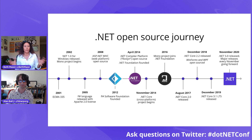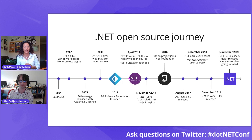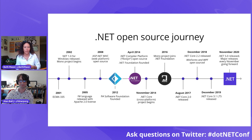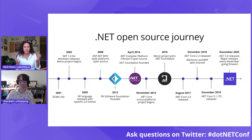In November last year, .NET 5 was released and the 'Core' branding was dropped to signify the unification of the platform. That means all the great stuff from .NET Framework, Mono, and Xamarin coming together into just one .NET. In November this year, .NET 6 will be released completing that unification with Mono.